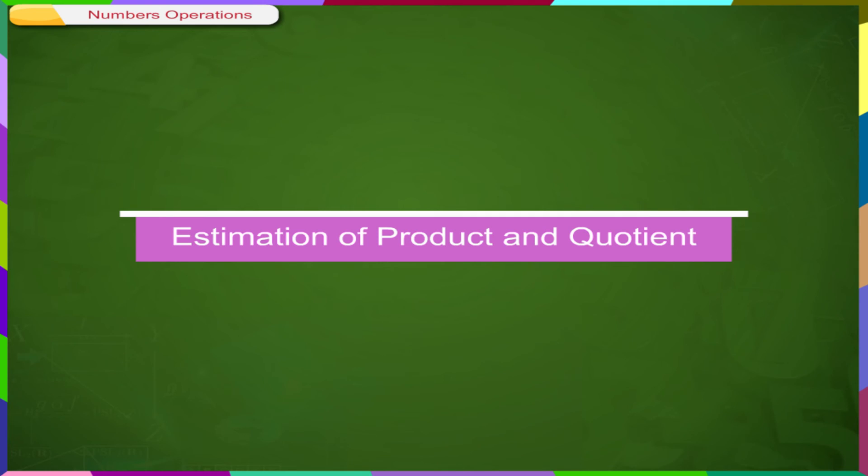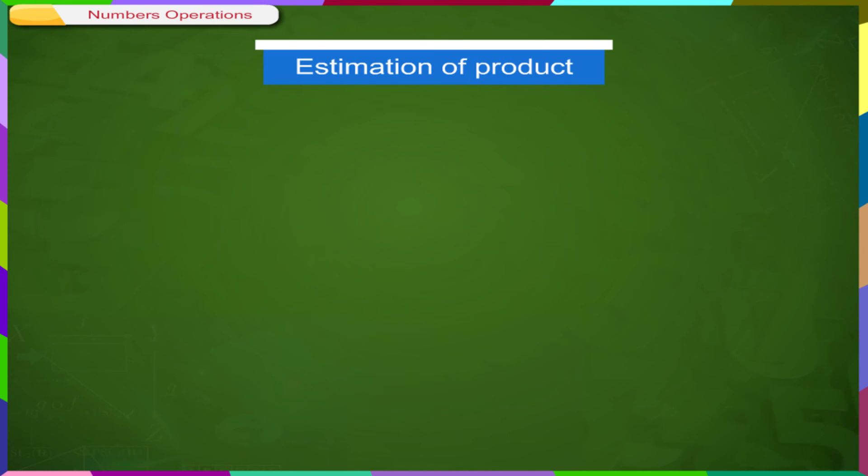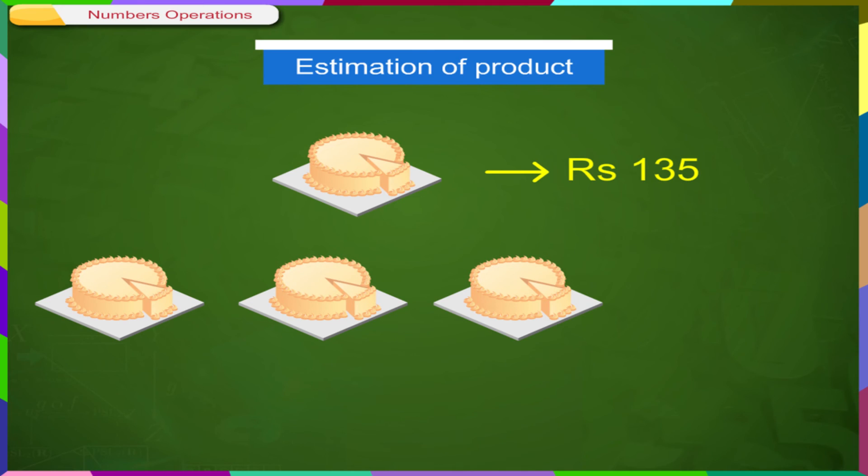Estimation of product and quotient. If 1 cake is Rs. 135 and you need to buy 3 cakes, we estimate 135 as 130 and multiply it by 3. We just multiply 13 into 3 and add a 0 to the product. The estimated amount will be 390.